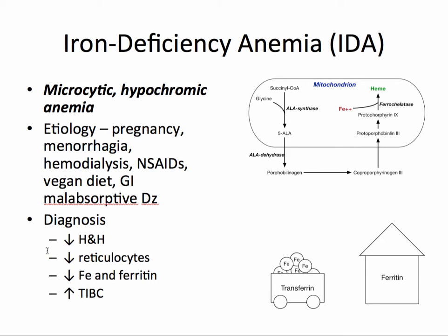In the labs, you'll notice a low hemoglobin and hematocrit as with all anemias, a low reticulocyte count, a low iron and ferritin, and a high total iron binding capacity, or TIBC.